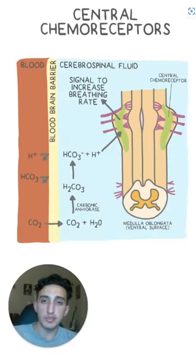These central chemoreceptors can monitor this acidity and tell the medulla oblongata that there's too much CO2 in the body. The medulla oblongata can then signal for changes in breathing in order to get rid of this acidity.